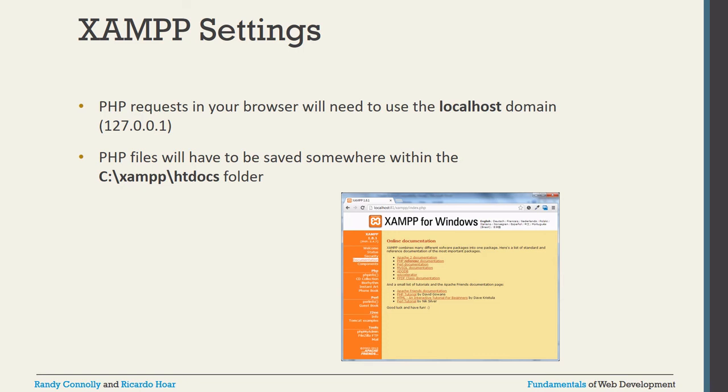Once the server is running, we have to write 'localhost' in the browser, and we will get the XAMPP page. Same thing in Linux with LAMP: once you start the Apache service (httpd), write localhost in Mozilla Firefox, and you will get the Apache Foundation homepage. In XAMPP, you write localhost or 127.0.0.1 and get the XAMPP Windows page. Same way for WAMP — after installation and starting the service, we will get the WAMP homepage. This is how you test whether your web server is running or not.